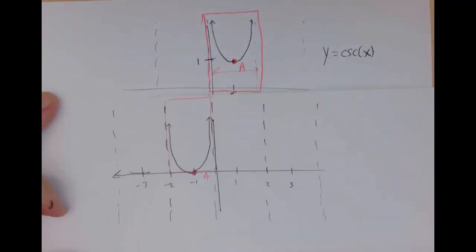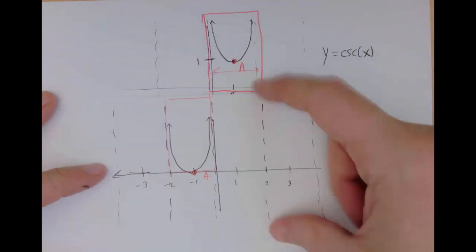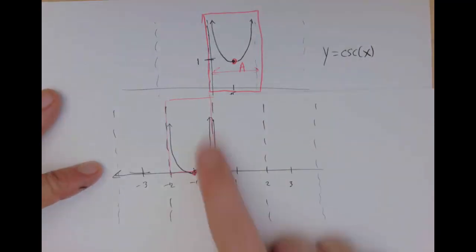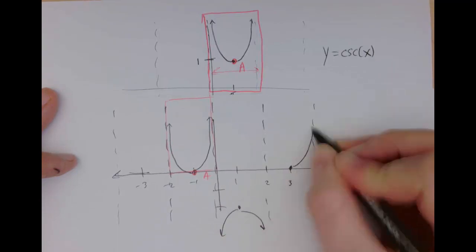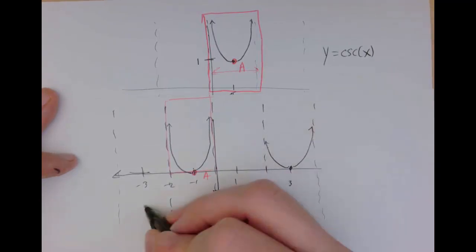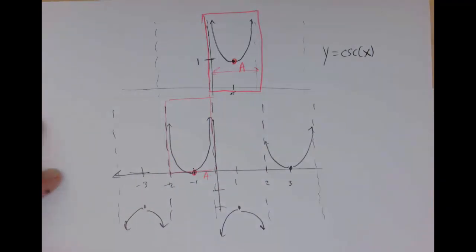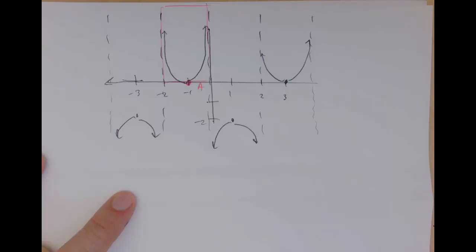So if the whole thing got shifted down, what used to be at 1 is now at 0, and what used to be at negative 1 is now at negative 2. So I can sketch that one here, this one here, that one there. These are all at negative 2. And that's what the final answer looks like. I hope that this was helpful.